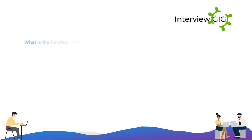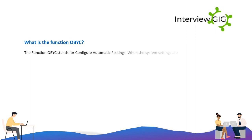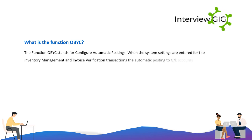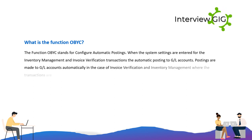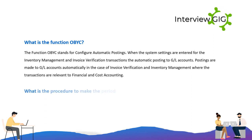What is the functional OBYC? The functional OBYC stands for configure automatic postings. When the system settings are entered for inventory management and invoice verification transactions, automatic posting to GL accounts occurs. Postings are made to GL accounts automatically in the case of invoice verification and inventory management where transactions are relevant to financial and cost accounting.